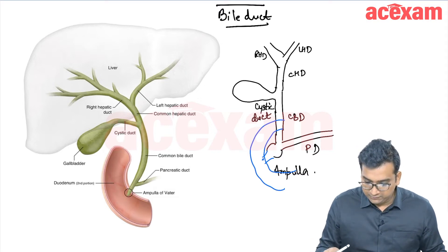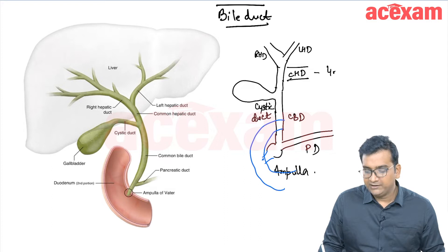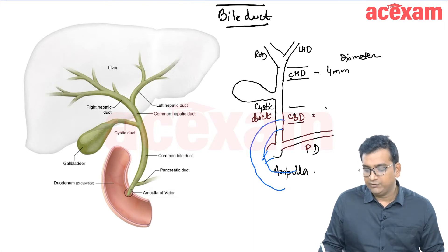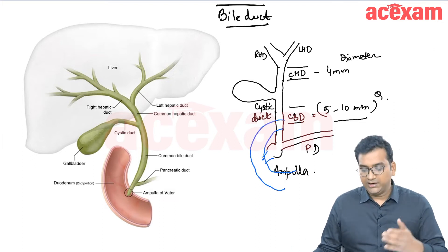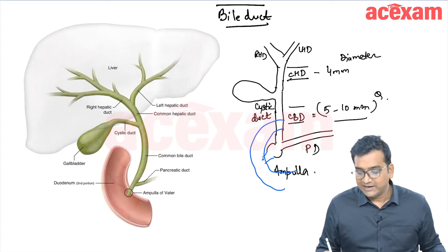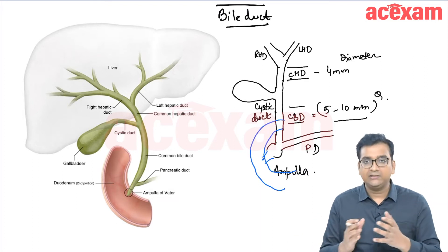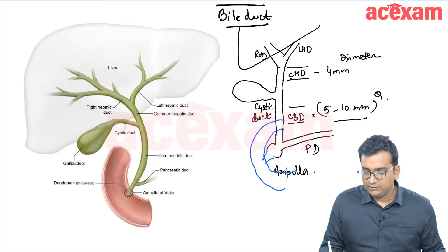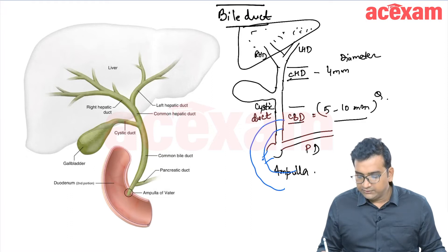The diameter of the common hepatic duct is 4 mm, and the diameter of the common bile duct ranges from 5 mm to 10 mm. This diameter is important because in cases of biliary obstruction at the level of the ampulla or distal CBD, there will be dilatation of the CBD, the common hepatic duct, and the intrahepatic biliary radicals.